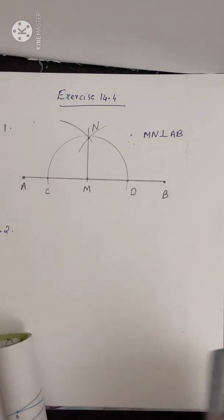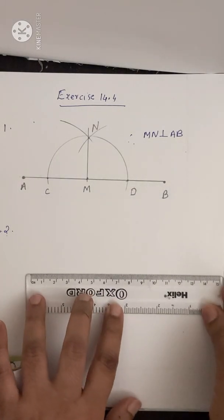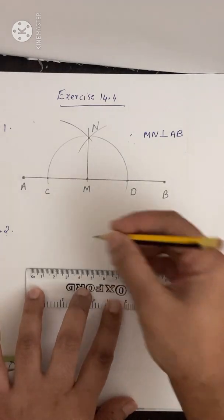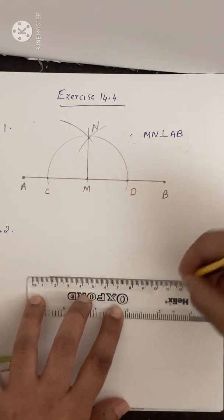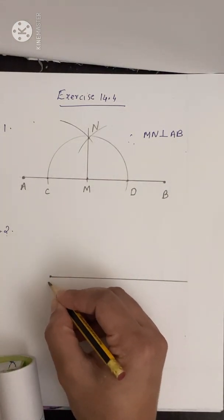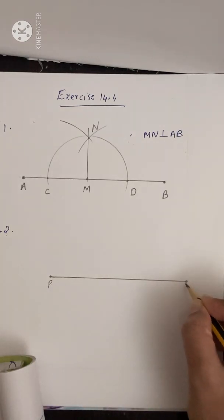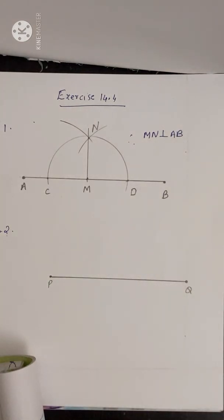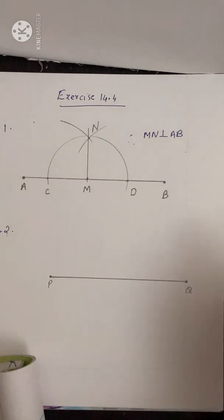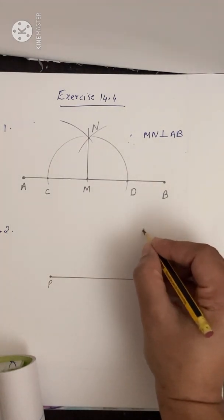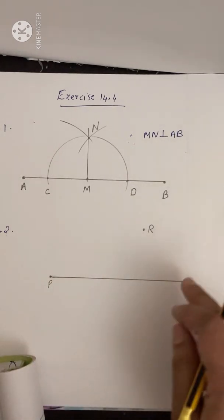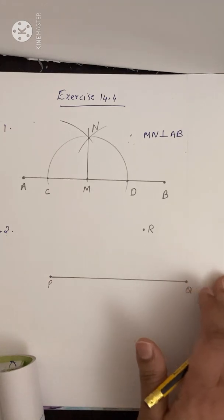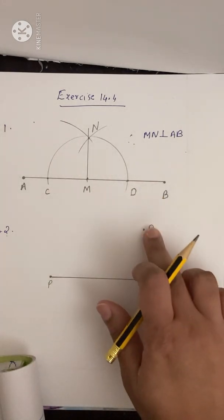First draw the line segment PQ — the measurement is not given so you can draw any length. Mark the endpoints as P and Q. Now take any point R not on the line segment. You can take R anywhere above or below, but keep it within the horizontal extent of the line segment.